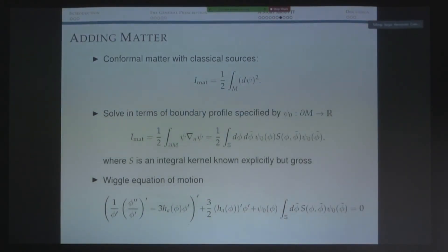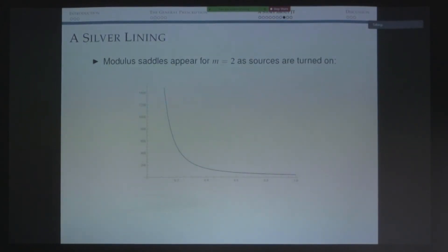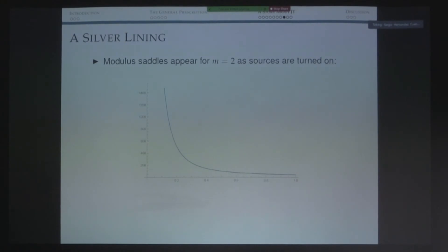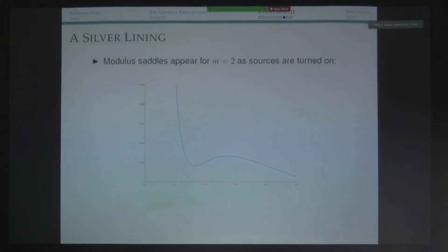We cannot obtain analytic results with this non-local term, so we proceed numerically. A starting point is to check whether adding matter helps stabilize the modulus for the double trumpet. Looking at the action against the modulus for no matter, it's monotonic — no saddles. As you increase the amplitude of the scalar at infinity, things improve, and at a high enough amplitude you do develop a saddle. This is a proof of principle: new saddles for the modulus do appear. The question is whether these saddles survive all the way to M smaller than 1.